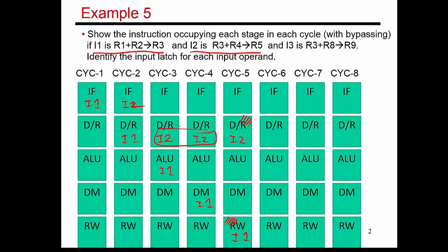With bypassing or forwarding, what we are exploiting is the fact that even before the value gets written into the register file, the value is still available somewhere in the processor pipeline. It is typically available in some latch and can be used as input by whatever ALU stage or data memory stage needs to consume that result.